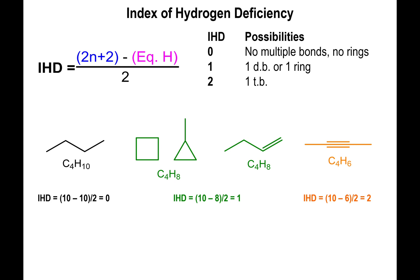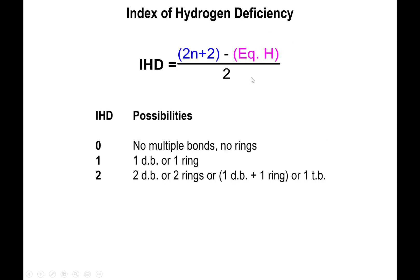An important feature: IHD values are additive. If you have two double bonds in your molecule, you have a total IHD of 2 — one per double bond. So for IHD = 2, the possibilities include: one triple bond, two double bonds, two rings, or one double bond plus one ring — any of these will give an IHD of 2.